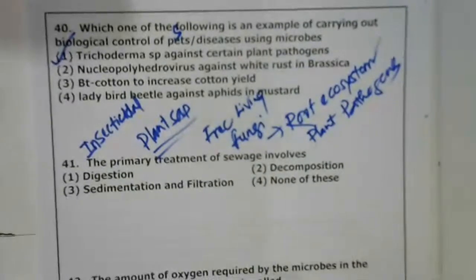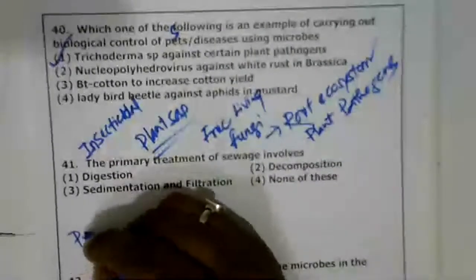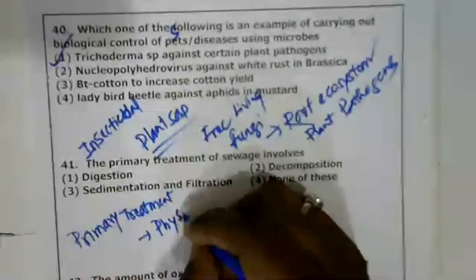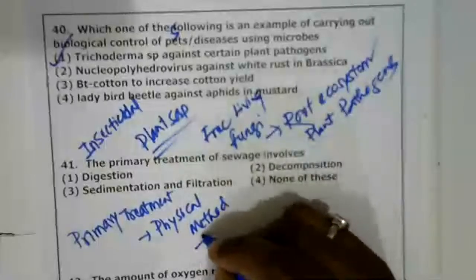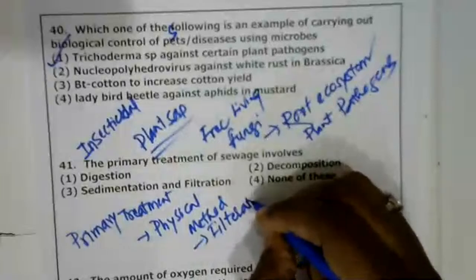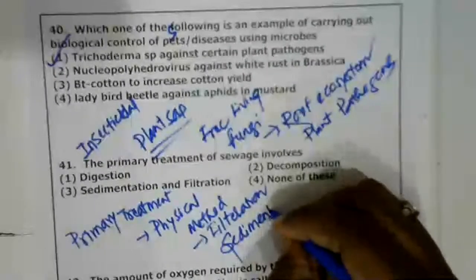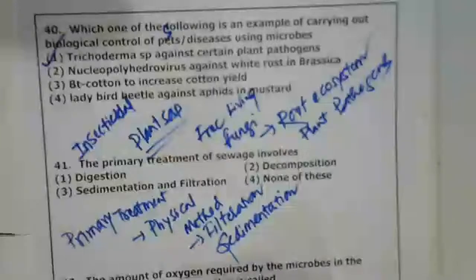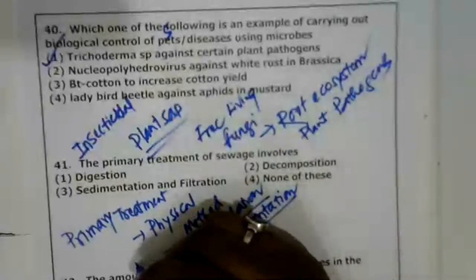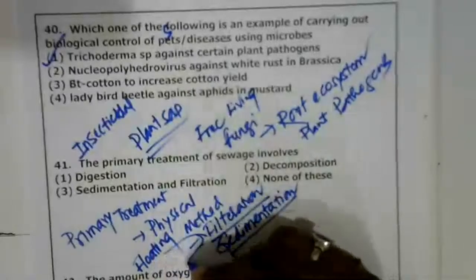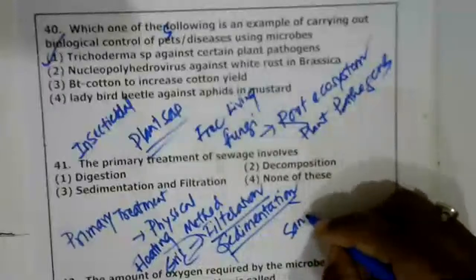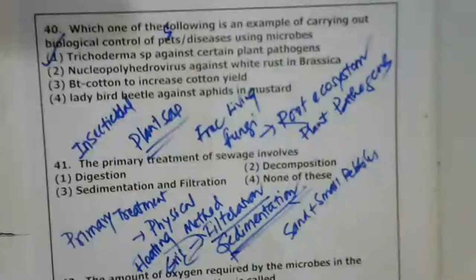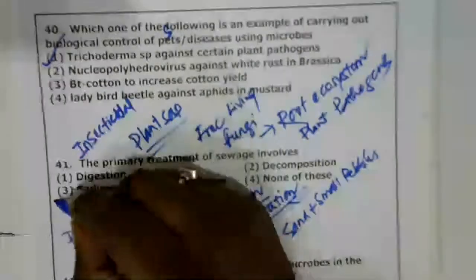Question 41: The primary treatment of sewage involves what? Primary treatment is a physical method involving two steps: filtration and sedimentation. Filtration removes floating debris; sedimentation removes grit — sand and small pebbles. So option 3, sedimentation and filtration, is the correct answer. Digestion is anaerobic sludge digestion; decomposition is a decaying process — neither fits the primary treatment.